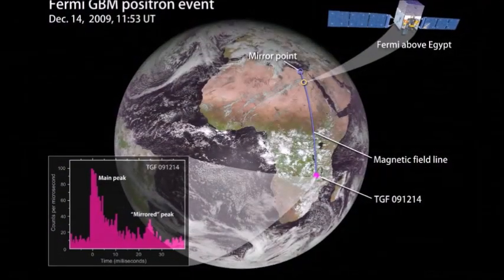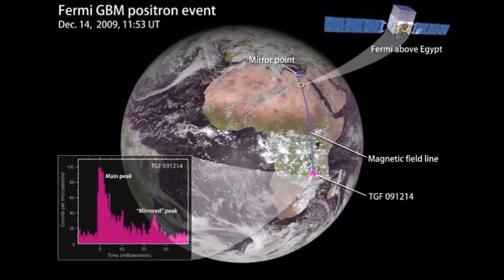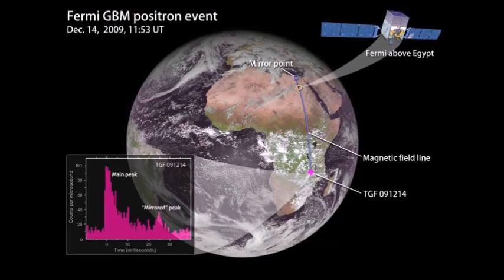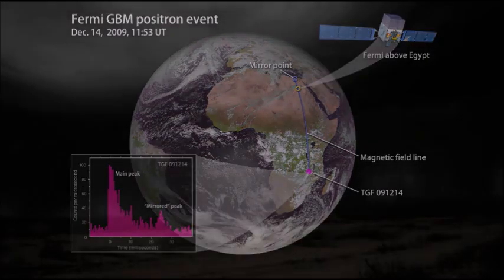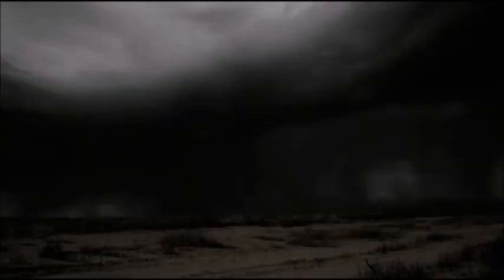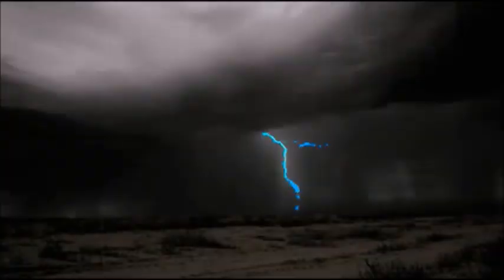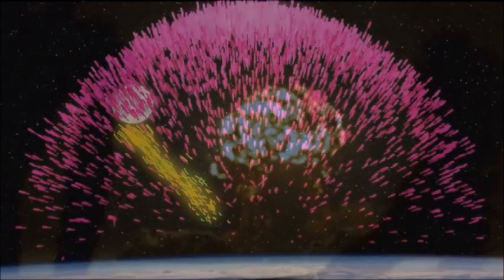This was demonstrated by an artificial satellite which on December 14, 2009, was hit by a beam of antimatter generated by a storm 5,000 km away. Scientists know that many storms, especially in tropical regions, can produce flashes of energetic radiation such as those generated by atomic bombs: gamma rays.